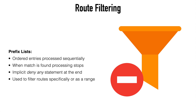First let's look at prefix lists. In many ways, prefix lists are similar to an access control list. They contain ordered entries that are processed sequentially from top to bottom. As soon as a prefix match is found against a prefix list, processing will stop, and at the end of a prefix list we have an implicit deny any statement. So all of those characteristics are similar to ACL function.